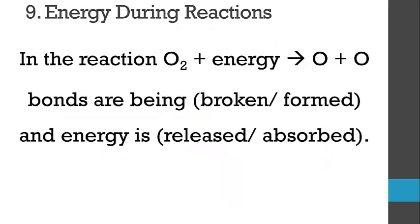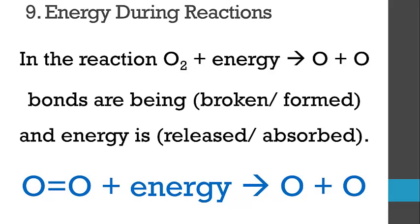In the reaction oxygen plus energy gives two oxygen atoms, we're going from O2 to two separate O atoms, so a bond is being broken. The double bond in O2 is broken. For this to happen, energy is a reactant, meaning energy needs to be absorbed.